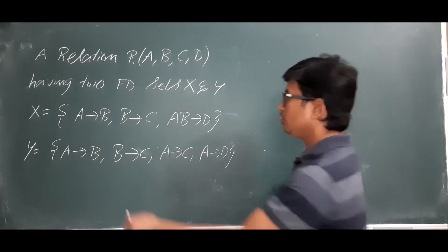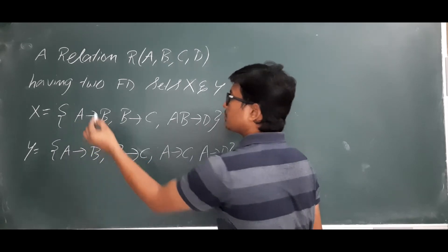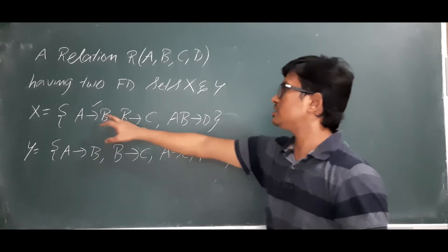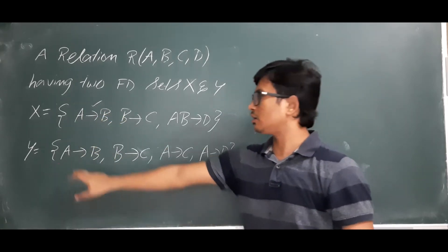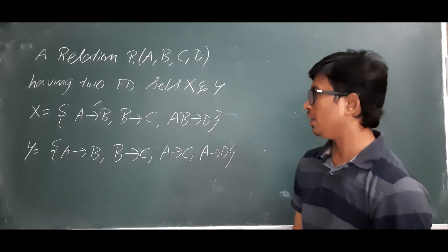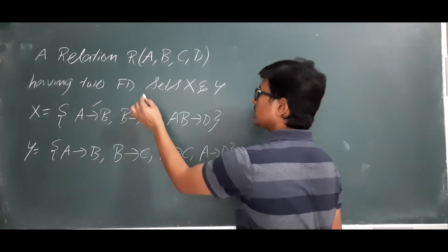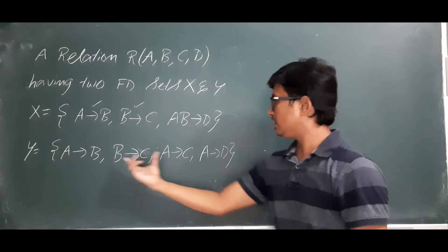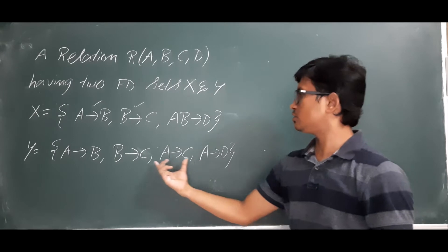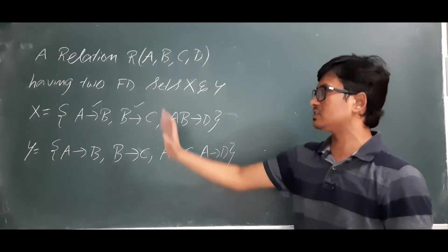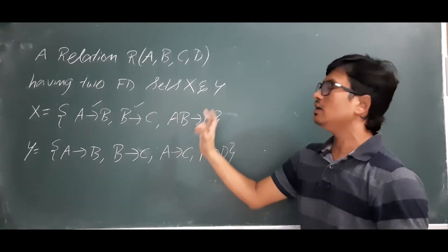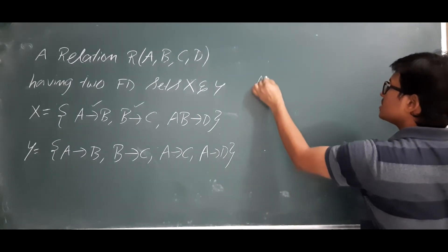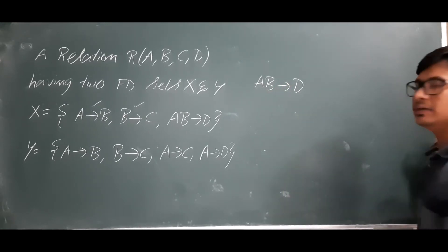Now, the FD A determines B is present in Y directly, so this FD I can derive from the set of FDs in Y. B determines C is also present directly in Y. Now if you see that AB determines D — it is not present directly in Y, but you cannot say that Y does not cover X. We will check whether it covers indirectly or not.